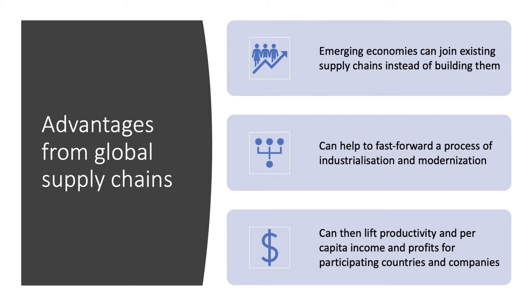Many economists think the global supply chain process can help fast-forward industrialization and modernization. You don't need to supply the entire product — you focus on different stages of production, so this could be a fast track to industrialization. If you can build successfully into global supply chains, that can lift productivity; ideas and know-how are shared, more formal employment in manufacturing lifts per capita incomes and savings, and it increases profits and tax revenues for participating countries.